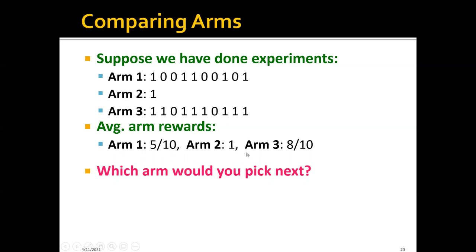But if you look carefully, we have only pulled m2 once. Therefore, this estimate of arm reward is actually not very confident. On the other hand, this third arm, although its average arm reward is slightly less than one, we have already pulled it 10 times. Therefore, this 0.8 is actually much more accurate and we are much more confident about our estimate. So maybe the third arm is also a good choice. And this is the intuition behind our new algorithm.